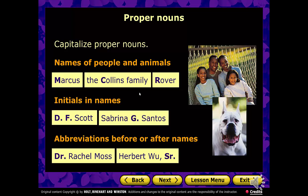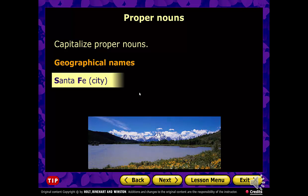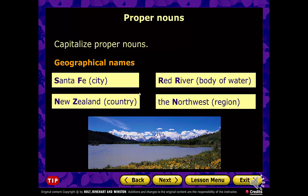Geographical names are also proper nouns. We can have cities like Santa Fe, countries like New Zealand, bodies of water like Red River — think of our own Reedy River in Greenville — and regions like the Northwest. We live in the Southeast, so we would capitalize S in Southeast when talking about the region.